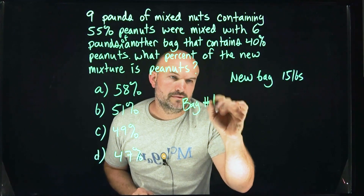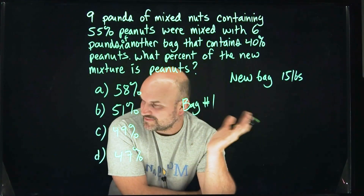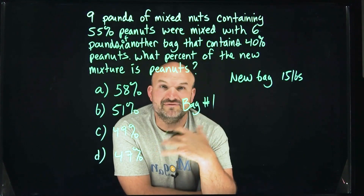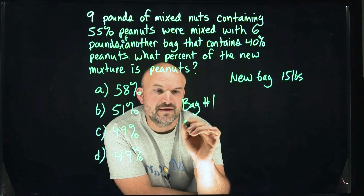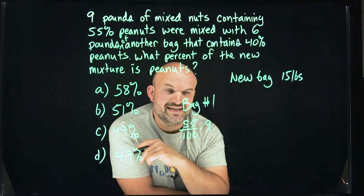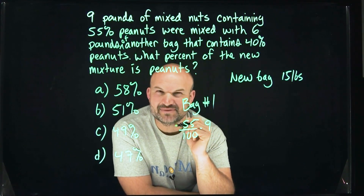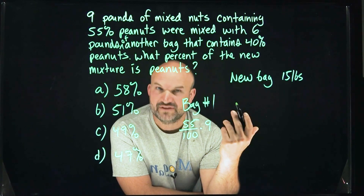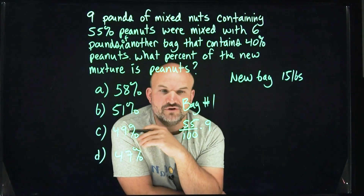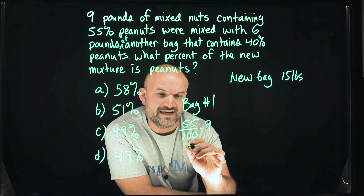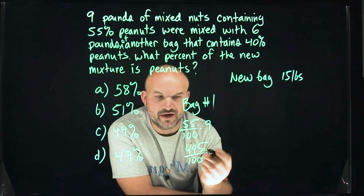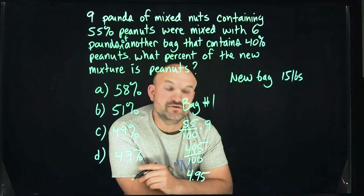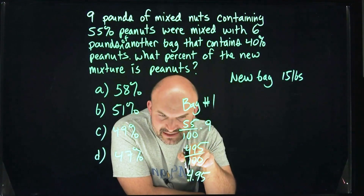For bag number one, we're going to take 55%. Rather than using decimals and a calculator — which you could do quickly — I want to show you without a calculator, so you can have more confidence not always having to rely on one. We can write 55% as 55 over 100, multiplied by nine. Nine times 55 divided by 100: we know 55 times 10 is 550, and nine is just 550 minus 55, which is 495, divided by 100. Moving the decimal point two spots gives us 4.95 pounds of peanuts in bag number one.